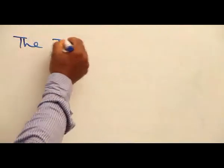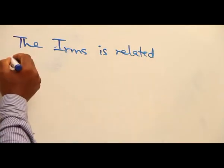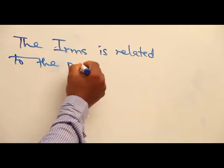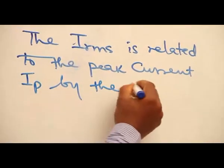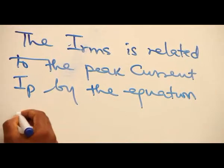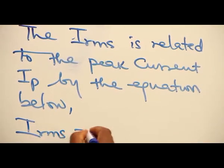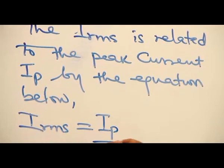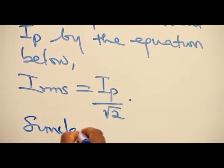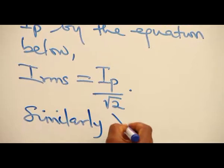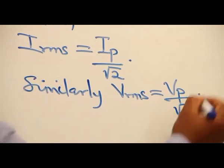The root mean square current is related to the peak current by the equation below. Root mean square current is equal to the peak current divided by the square root of 2. Similarly, root mean square voltage is equal to the peak voltage divided by the square root of 2.